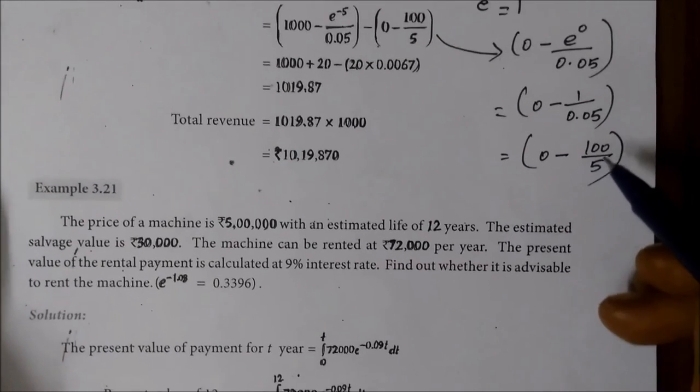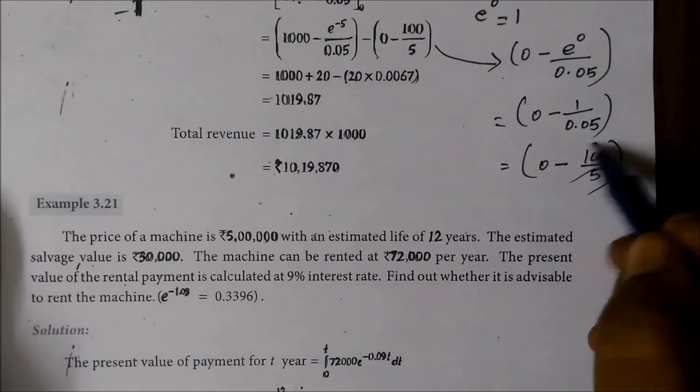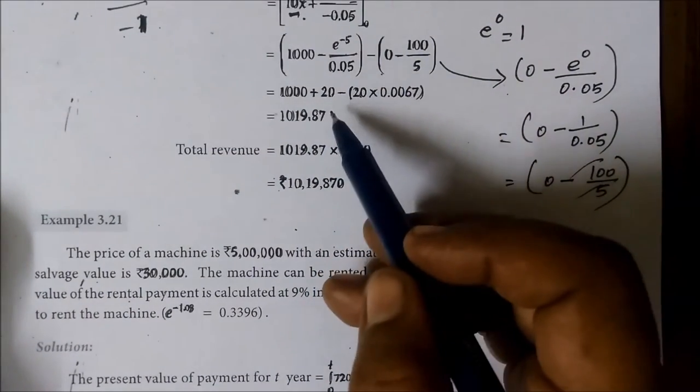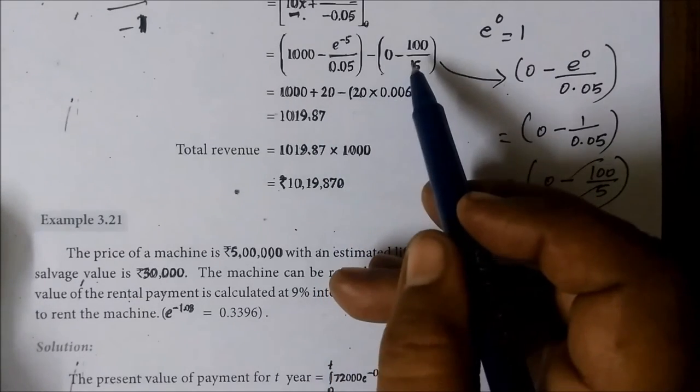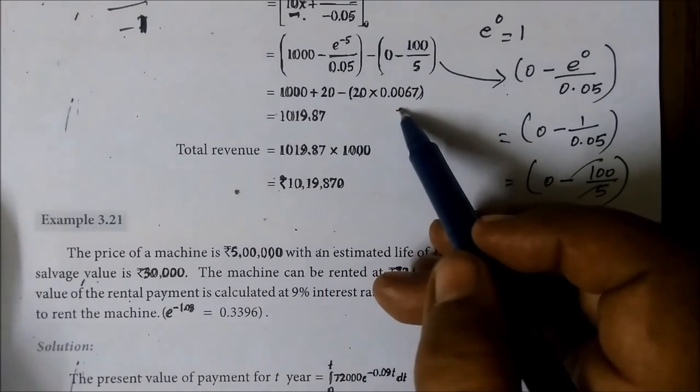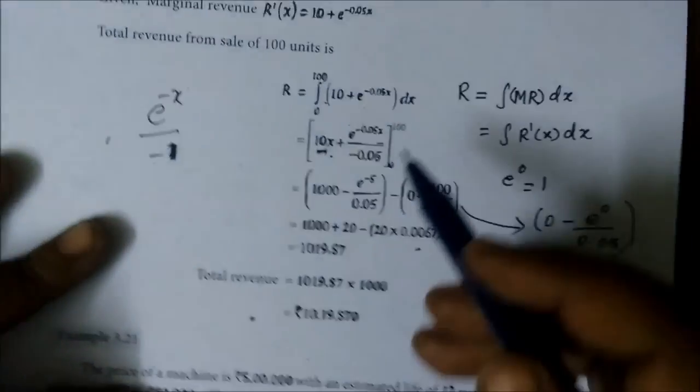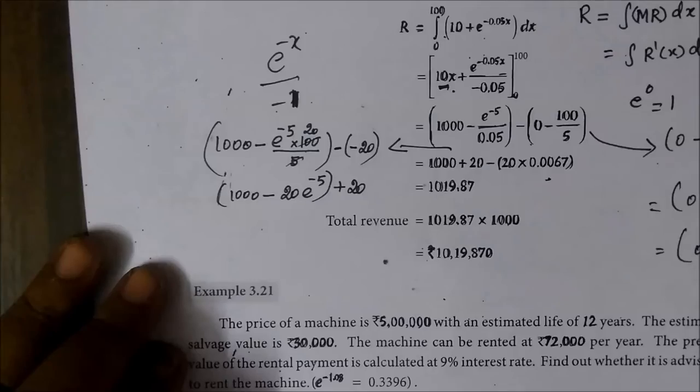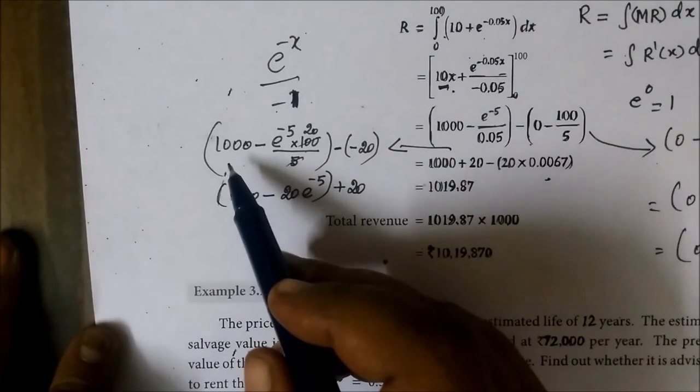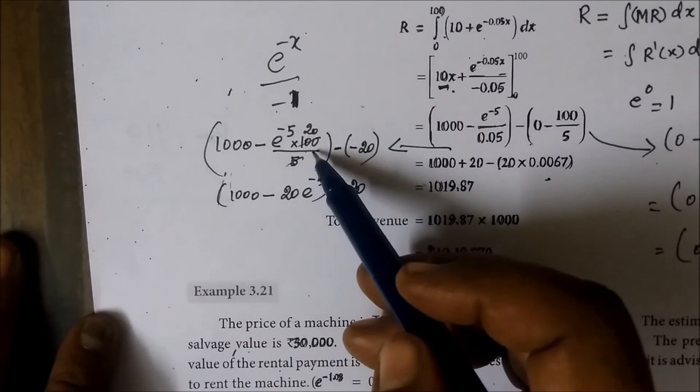1 by 0.05, point remove, 2 0 by 5. If you cancel it, you are getting 20. This is just calculation. 1000 plus this is the value. Then minus 20 into this value, e power minus 5. If the point is removed, 100 by 5, it is cancelled by 20.